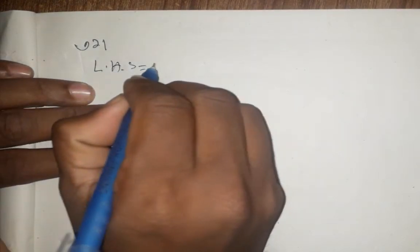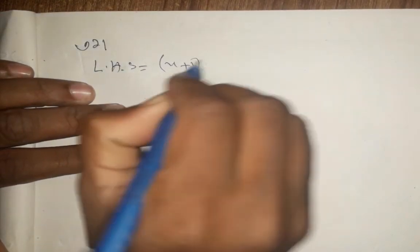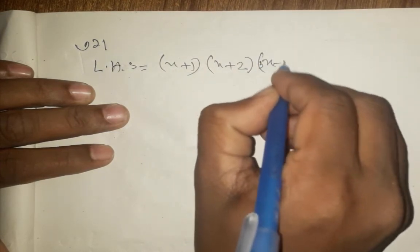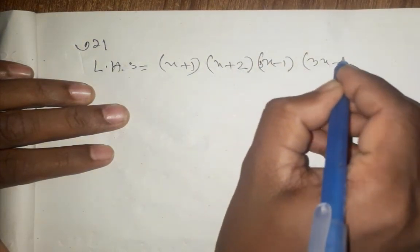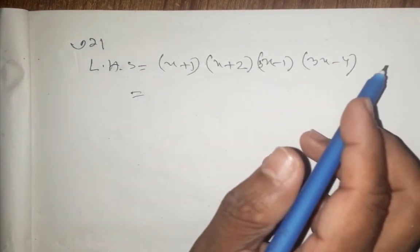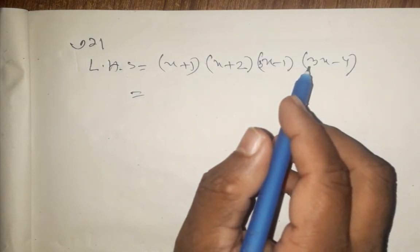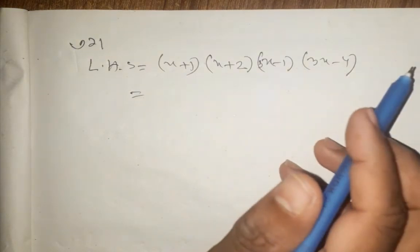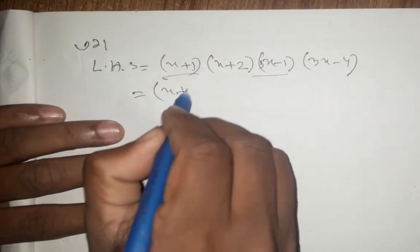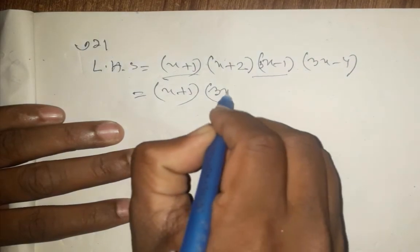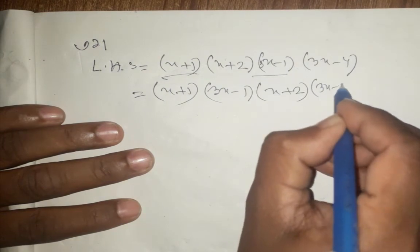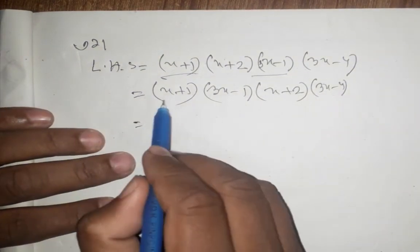x plus 1 into x plus 2, x plus 1 into x plus 2 into 3x minus 1, 3x minus 1, x minus 1 into 3x minus 4. We can take eight and change to ground eight together: x plus 2, x minus 4, then x plus 2 equals 3x minus 4.